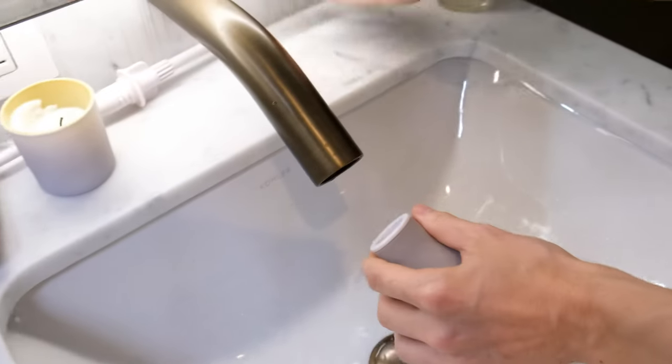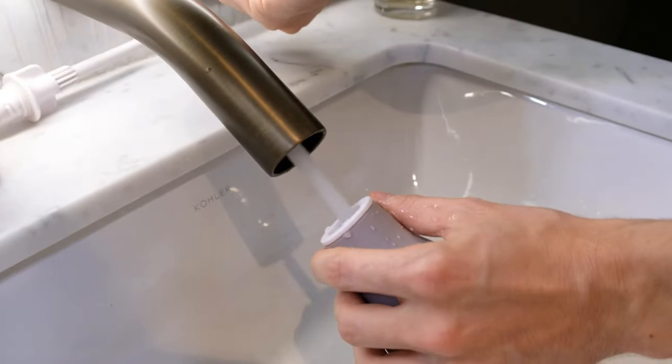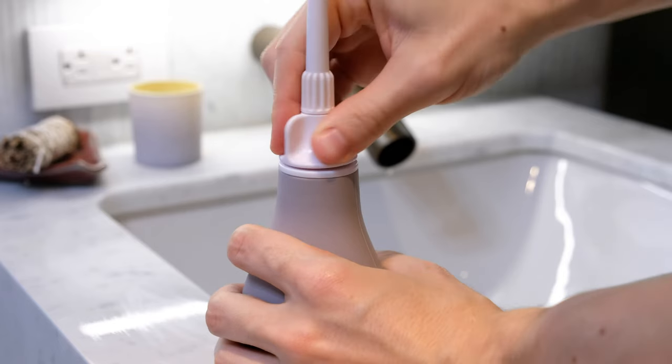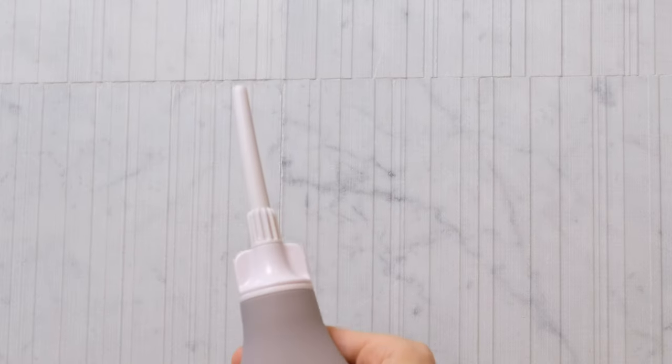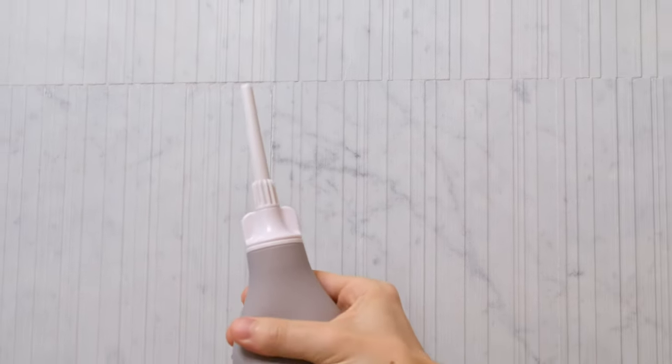To fill Dew, remove the cap and add lukewarm water. Then replace the cap and ensure a tight seal. Insert the lubricated tip and squeeze the bulb gently.